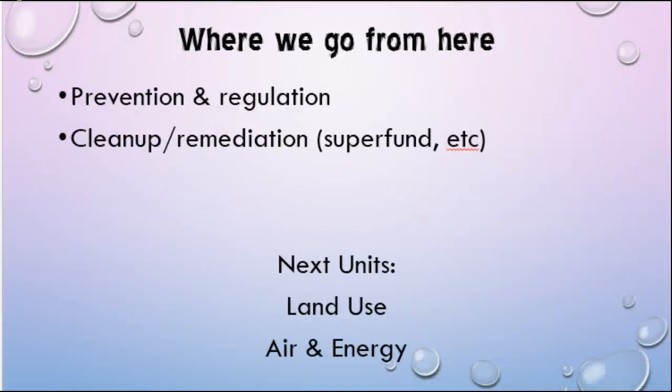From here we need to talk more about how to prevent this pollution in the first place, how it gets regulated, and also — once it's already there — how we remediate that area. That's where our Superfund sites come into play. In our next couple of units, we're going to talk more about that and more about all of these toxins. Next unit is land use, where we'll get into soil contamination and cleanup processes like landfills, and then after that we'll follow with air and energy, covering how some of these tie into air pollution. Come in next class prepared to talk about these toxins — particularly how we're currently regulating them — and that will wrap up our water unit.